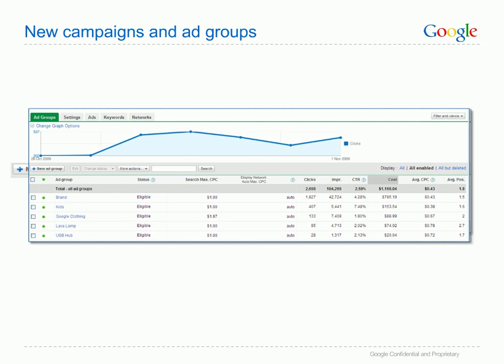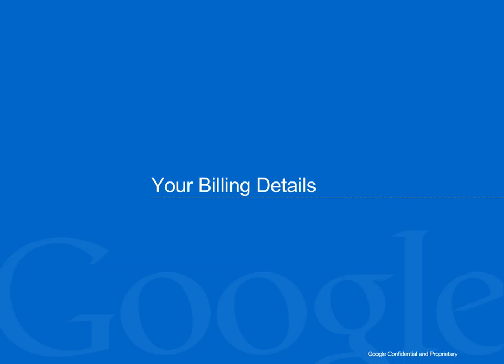If you would like more detail about how to work with your account, including reviewing and improving your performance, take a look at the next course in the Getting Started series. For now we are going to leave campaigns and take a quick look at another important aspect of your account: your billing details.